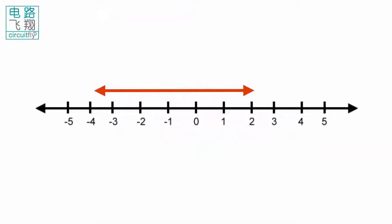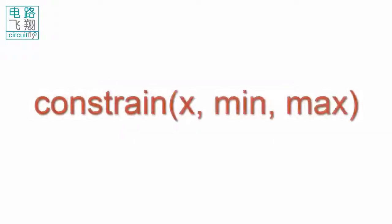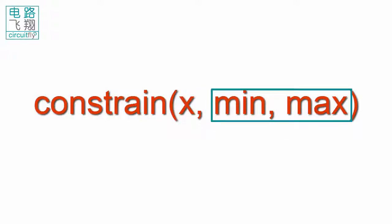The function constrain restricts a number to be within a range. The syntax is constrain(x, min, max), in which x is the variable to be constrained, min is the lower end of the range, and max is the upper end of the range, respectively.